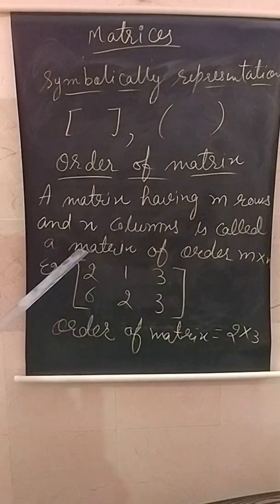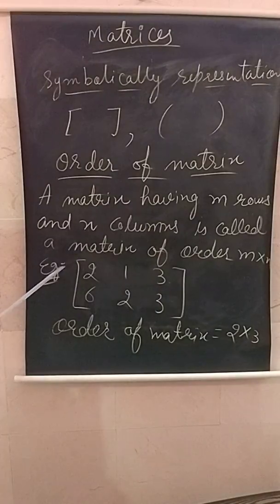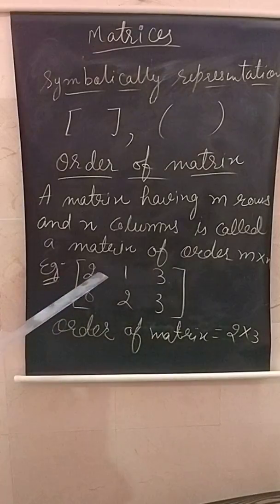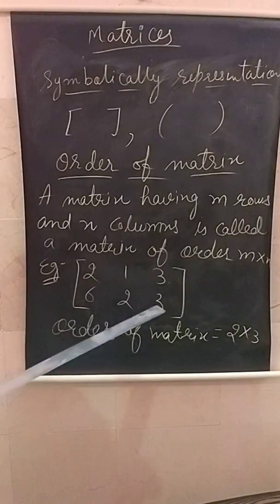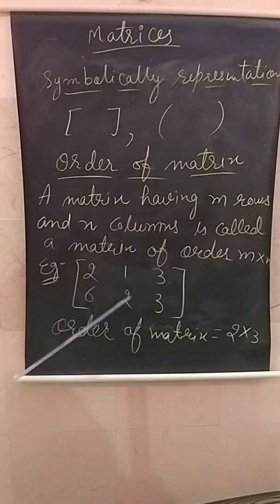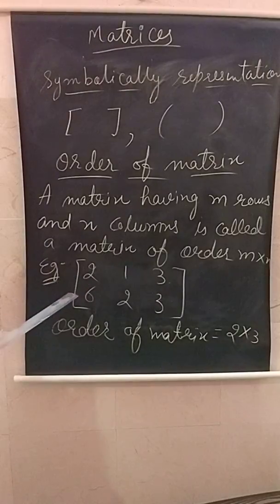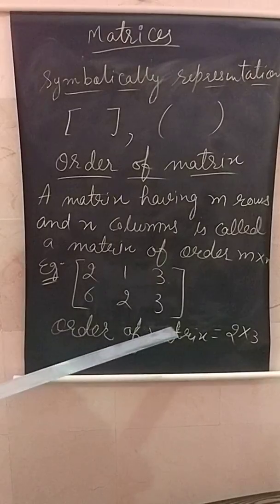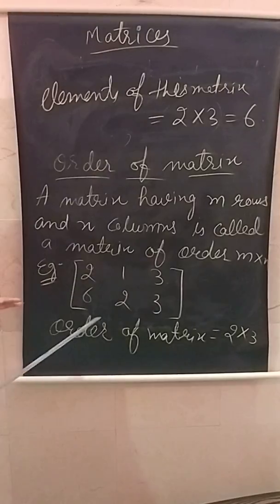For example, in this matrix, this is row one and this is row two, and we have three columns here — column one, column two, and column three. We have two rows and three columns, so the order of this matrix is two by three.